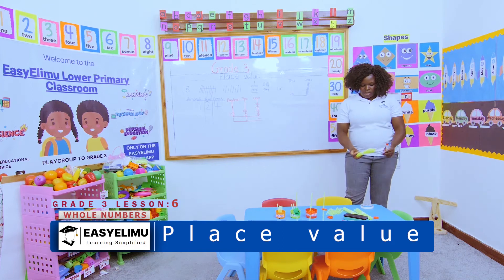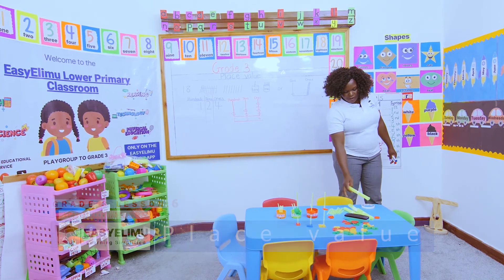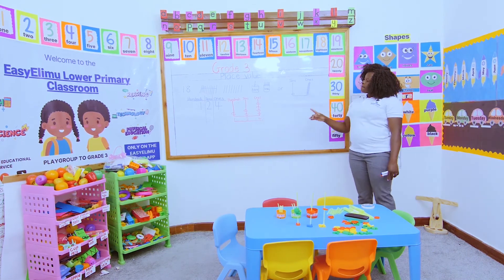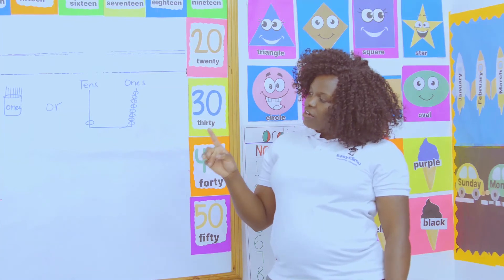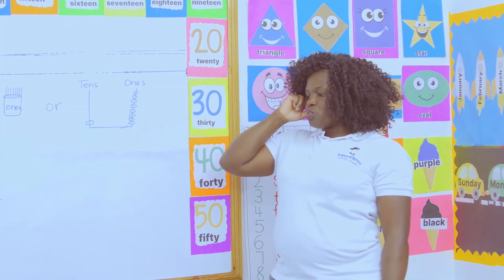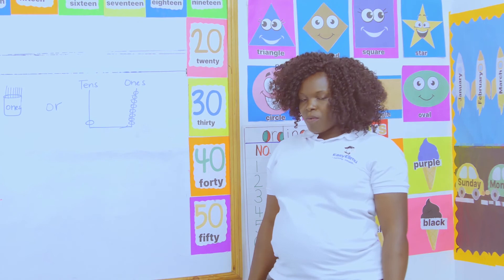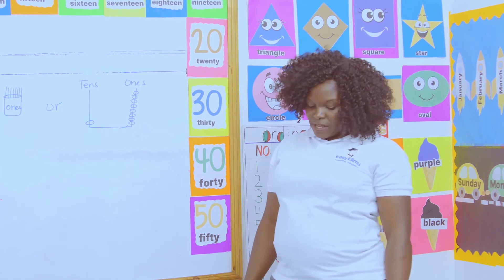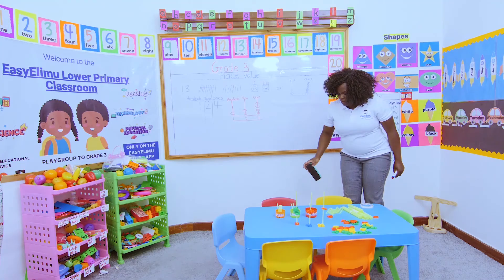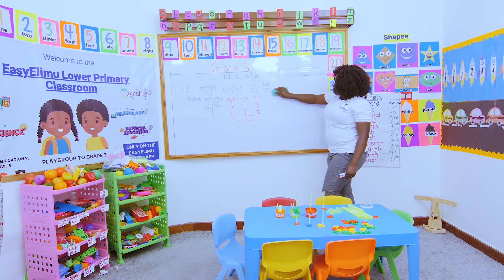It is the same thing when I'm told to use bundles of sticks. How many bundles should I have? I shall have one hundred bundle of sticks, then two tens bundles, then four ones — giving me the same number.